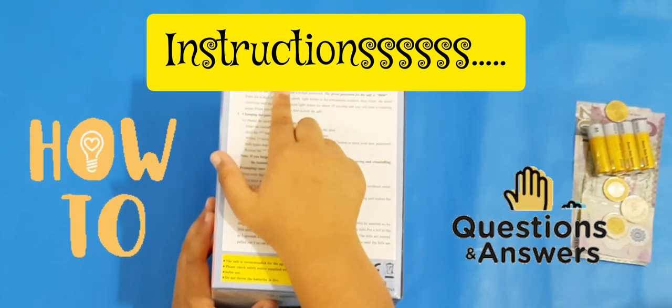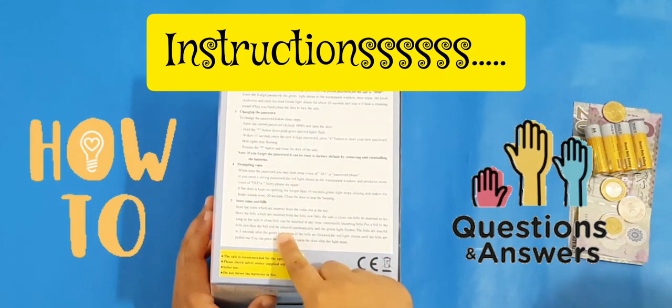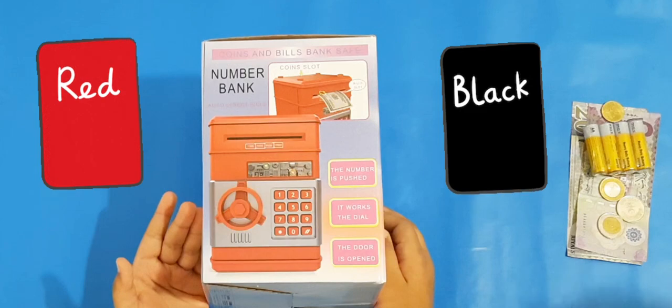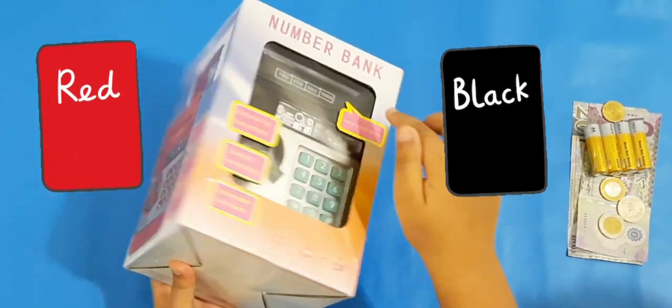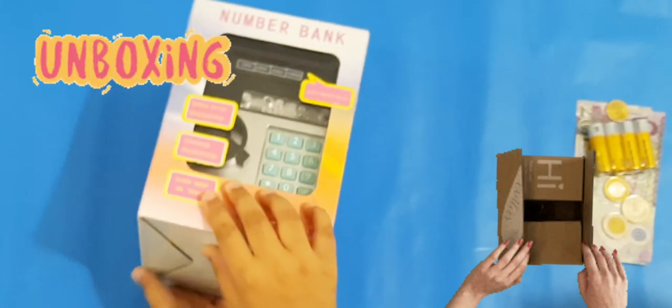On the back of the box we can see instructions to operate the safe. You can get this safe in red and black. We have the black version. Now let's unbox it.